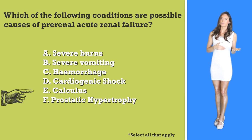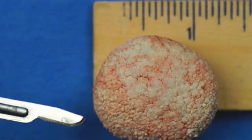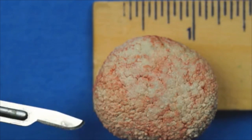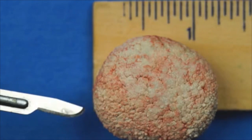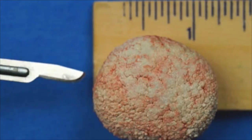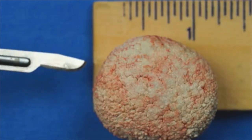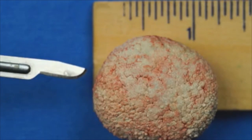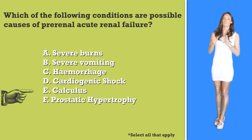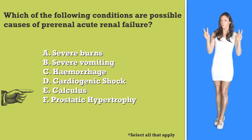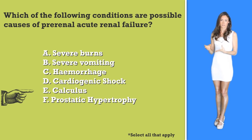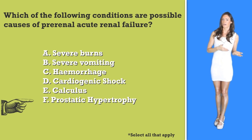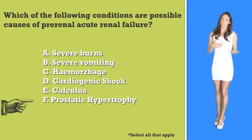Option E, calculus: in the body, calculus means a concentration of solids, usually from mineral salts. This can be caused by an obstruction in the kidney, but this would not be a cause of pre-renal failure — which is what the question is asking for — so this option is incorrect.